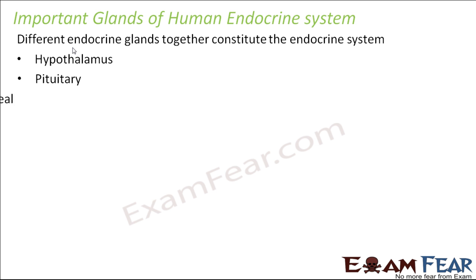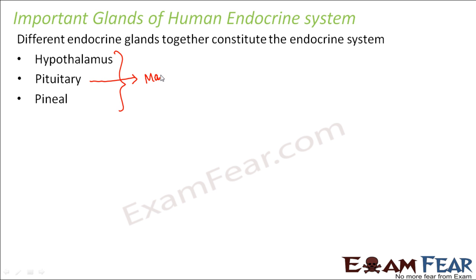The important endocrine glands include the hypothalamus, pituitary, and pineal. So all these three glands are located in the human brain. In fact, I already mentioned about the pituitary gland — this is the master gland because it controls the secretion from all other glands.